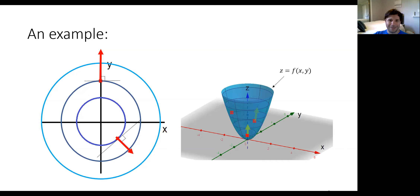Let's look at one more point on the backside of the bowl, right along the x-axis on that third level curve. If we project that coordinate down into x-y space, we draw the tangent line and then the gradient vector perpendicular to it. Moving in that direction means we move along the x-axis and up the function, climbing out of the bowl as quickly as possible.